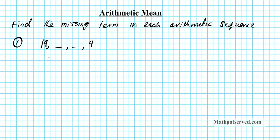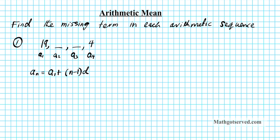In order to find them, let's assign variables. I'm going to call the first term a sub 1 — the index tells me the position. So a sub 1, a sub 2 is the first arithmetic mean, a sub 3 is the second one, and a sub 4 is the last term. To find these two terms we use the formula for the nth term of an arithmetic sequence: a_n equals a1 plus (n minus 1) times d, the common difference.